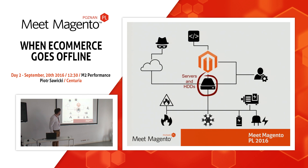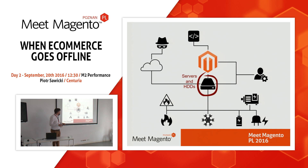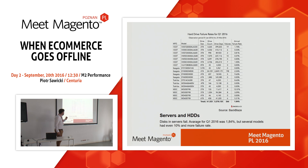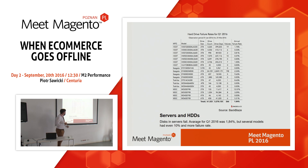Finally, there are the server disks that Magento runs on, and those can also break. They have a predefined lifecycle and are meant to work for a few years, but they tend to break earlier. I found statistics from a research study conducted on more than 60,000 disks in the first quarter of 2016. In that quarter, 2% of them broke down, and for some models the failure rate was more than 10% of disks failing during that time period.